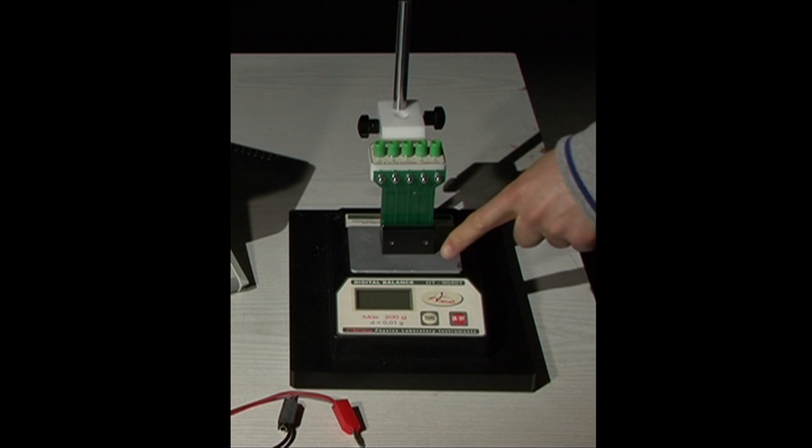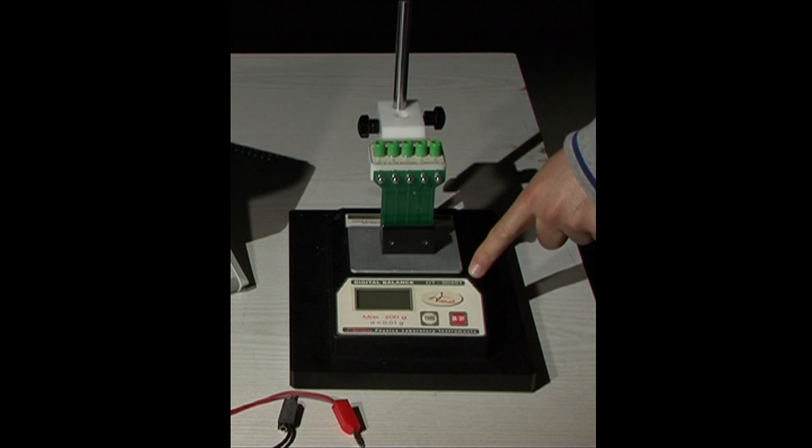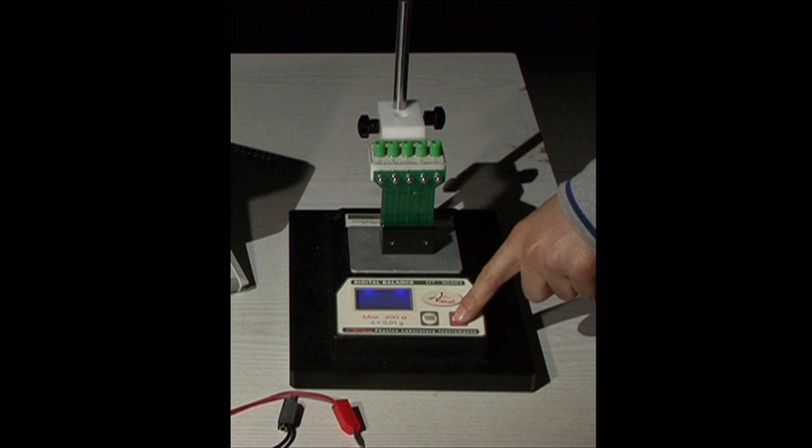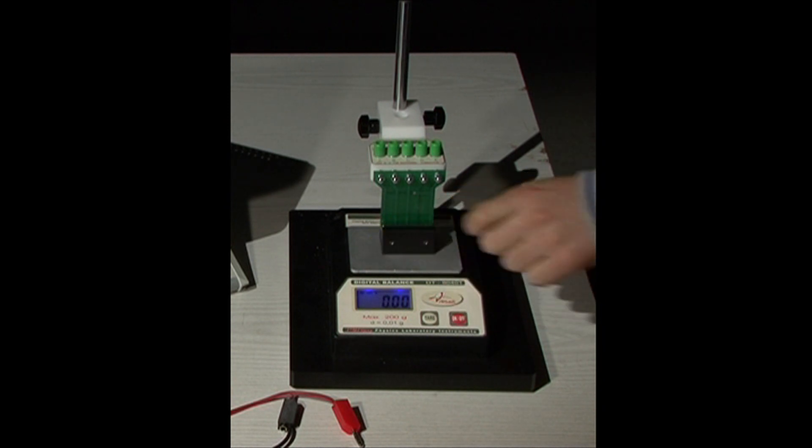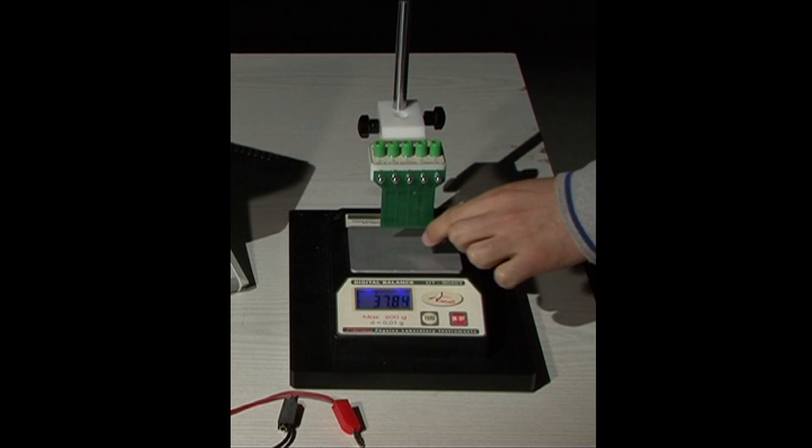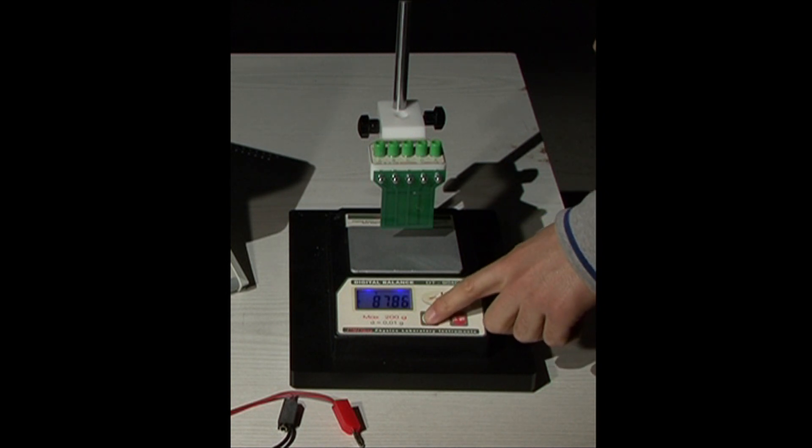You will measure the force affecting the wire using this balance. Turn on the balance. In order to understand how it operates, take the magnets off. Now, it displays the weight of the magnets with minus sign. Now, press on the tare button and place the magnets again.